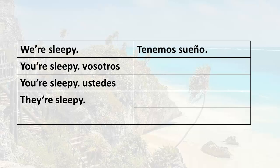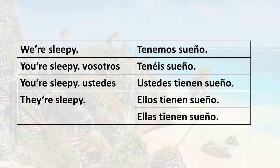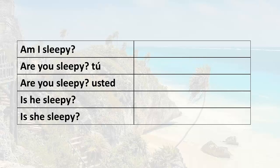You're sleepy using vosotros in Spain. Remember, vosotros is two or more people that you know well — it's informal plural you in Spain. Tienes sueño. You're sleepy using ustedes — ustedes tienen sueño. They're sleepy — ellos tienen sueño, or ellas tienen sueño.